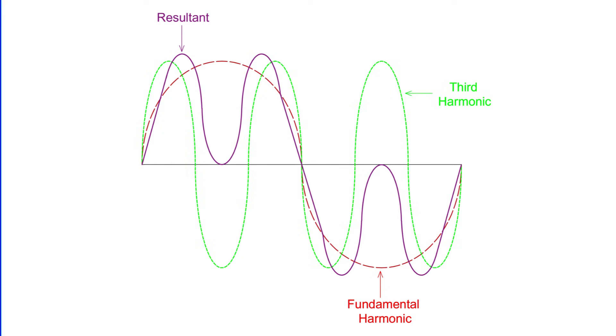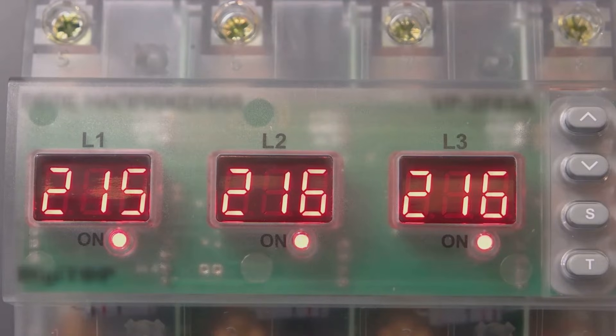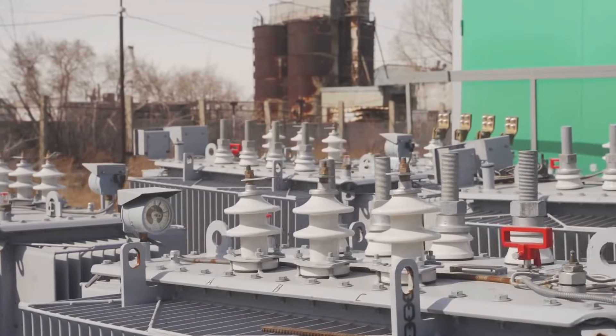The third harmonic is a bit of a rogue player. It creates what we call a zero sequence current in the power system. This means that when the fundamental harmonic current reaches zero, so does the third harmonic current. When the fundamental harmonic reaches its peak, the third harmonic hits high at the negative side. So what's the impact of all this? This zero sequence current leads to an increase in the neutral voltage in the system, and we all know what happens when the neutral voltage increases: our trusty relay activates the circuit breaker.